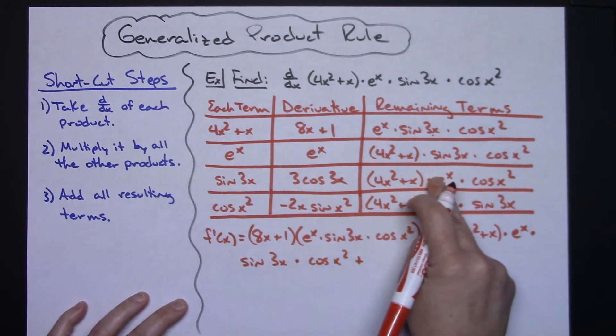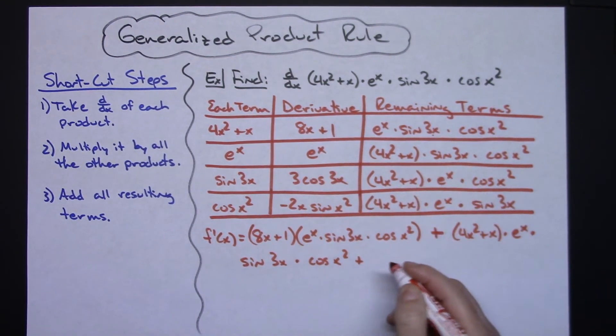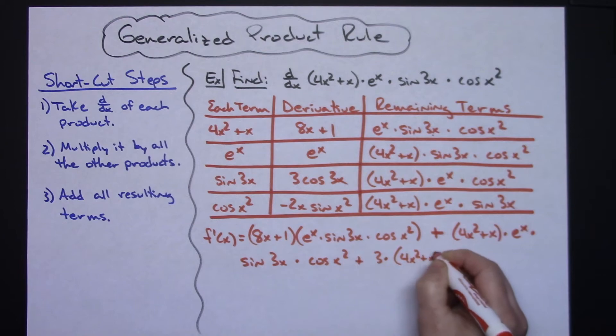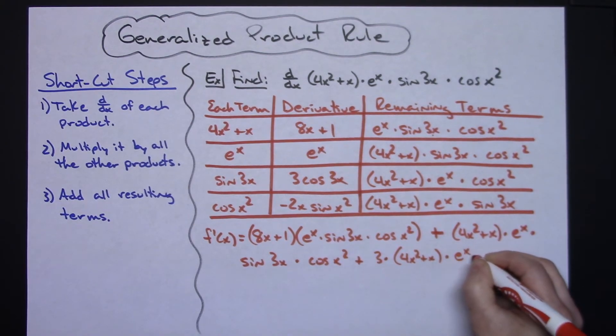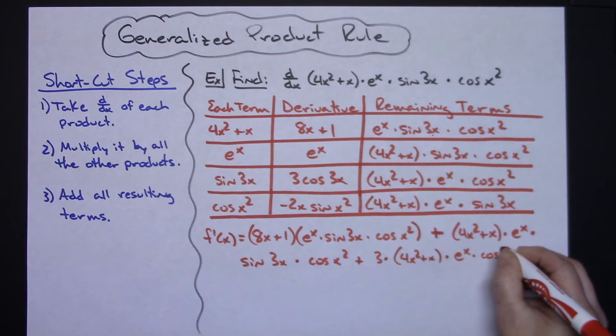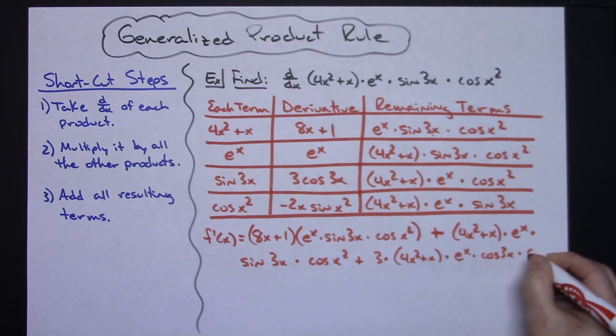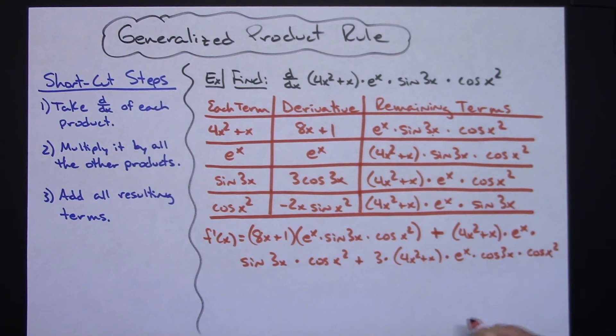Now doing this one. This times this. Again, rewriting maybe a little bit. Let's keep the 3 out in front. And then maybe the 4x squared plus x times e to the x times cosine of 3x times the cosine of x squared.